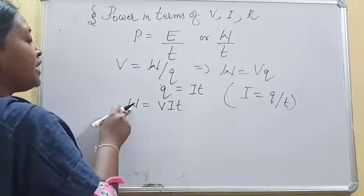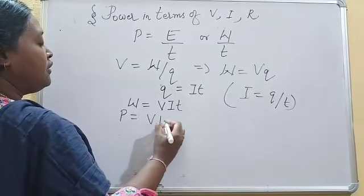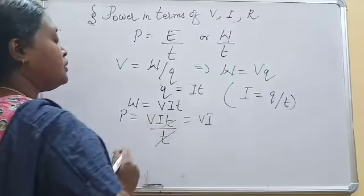Now we will substitute the value of W in the first expression. P equals V, I, T upon T. T will be cancelled out. Then P equals V, I.